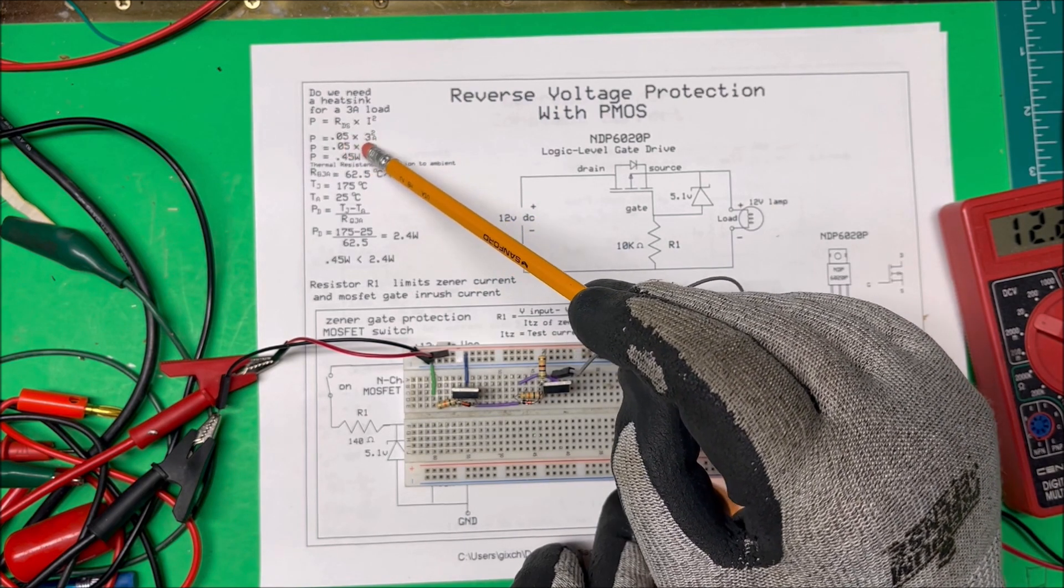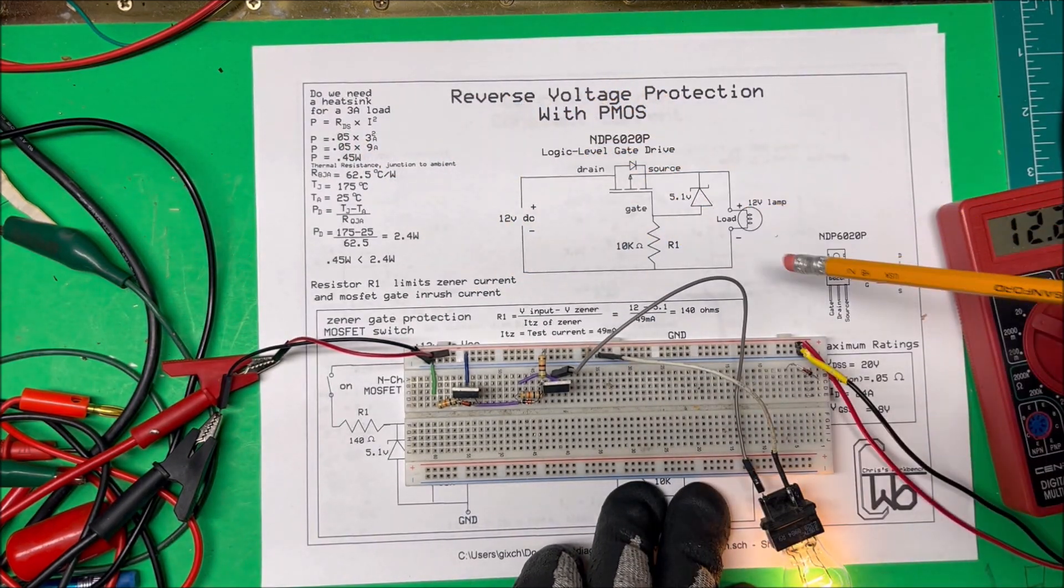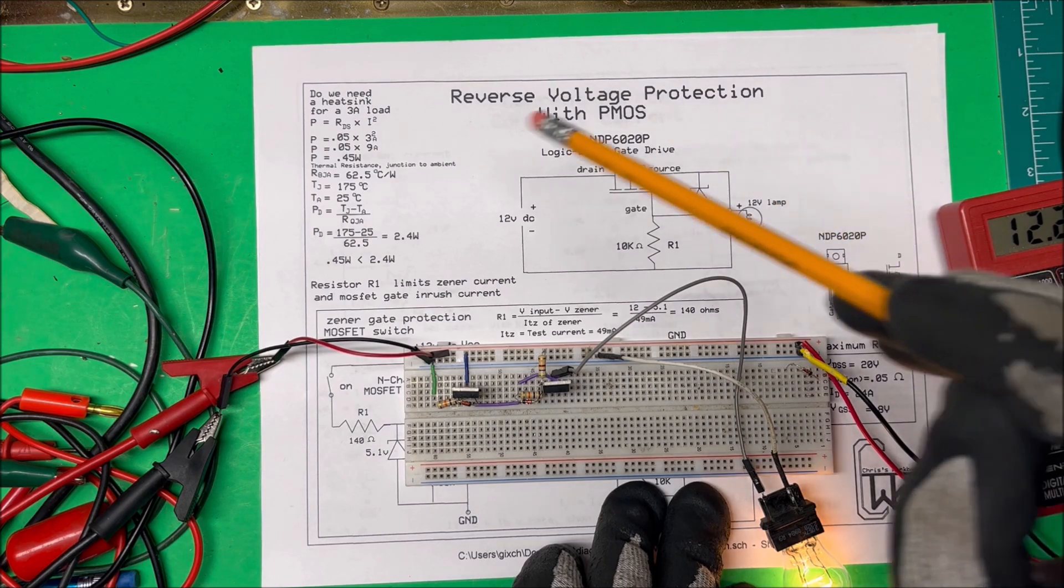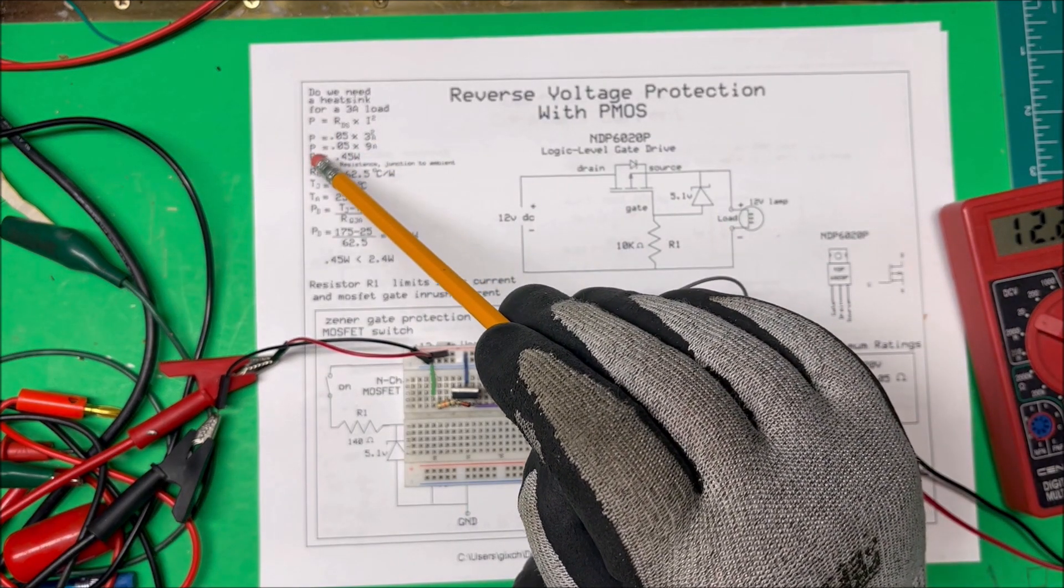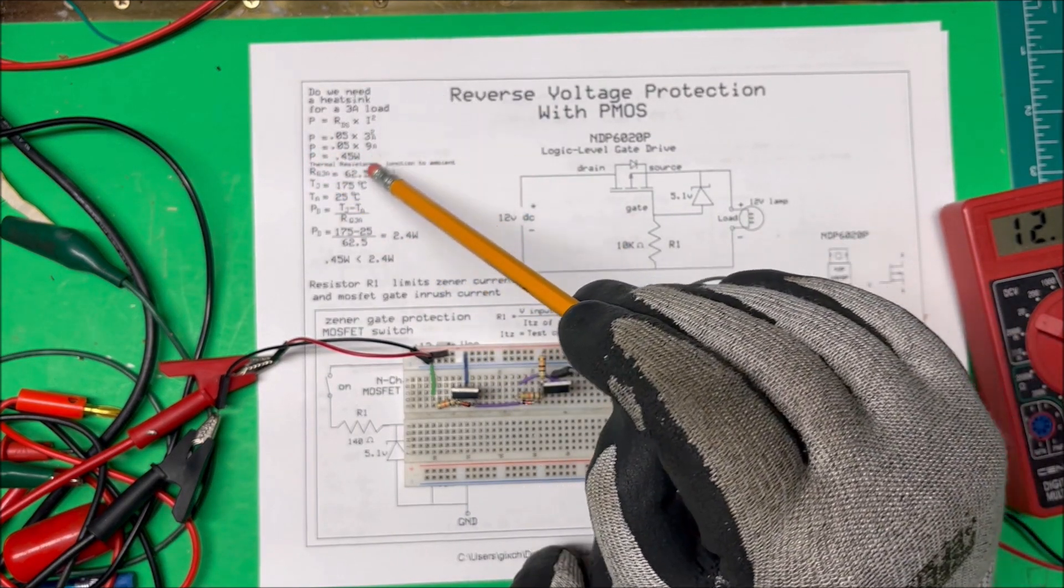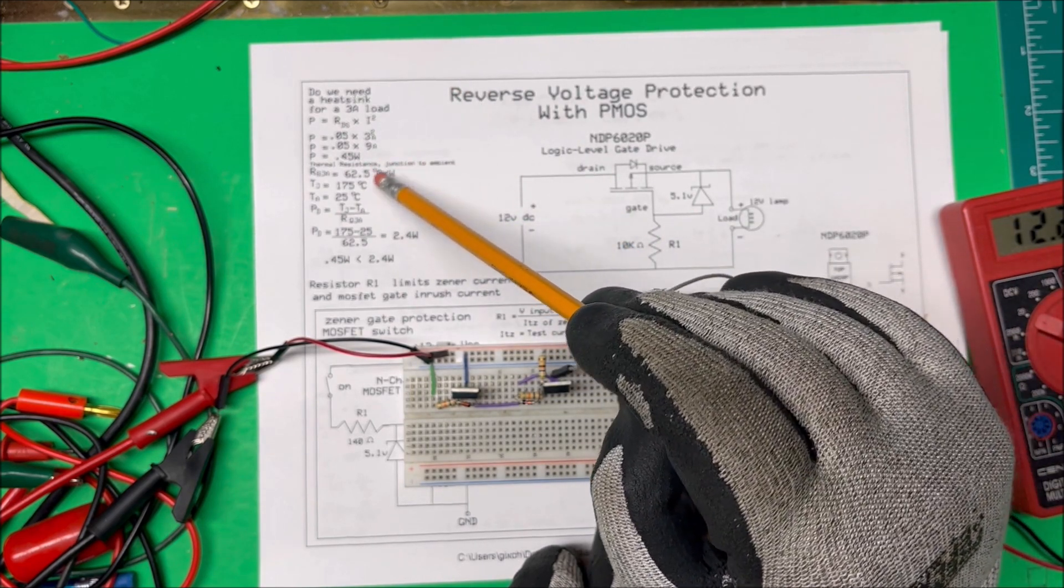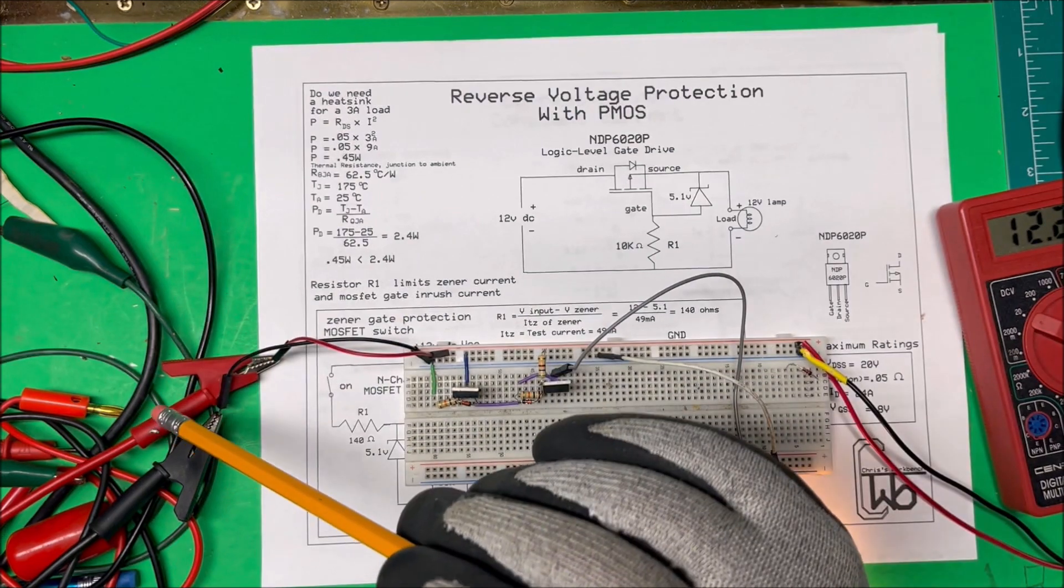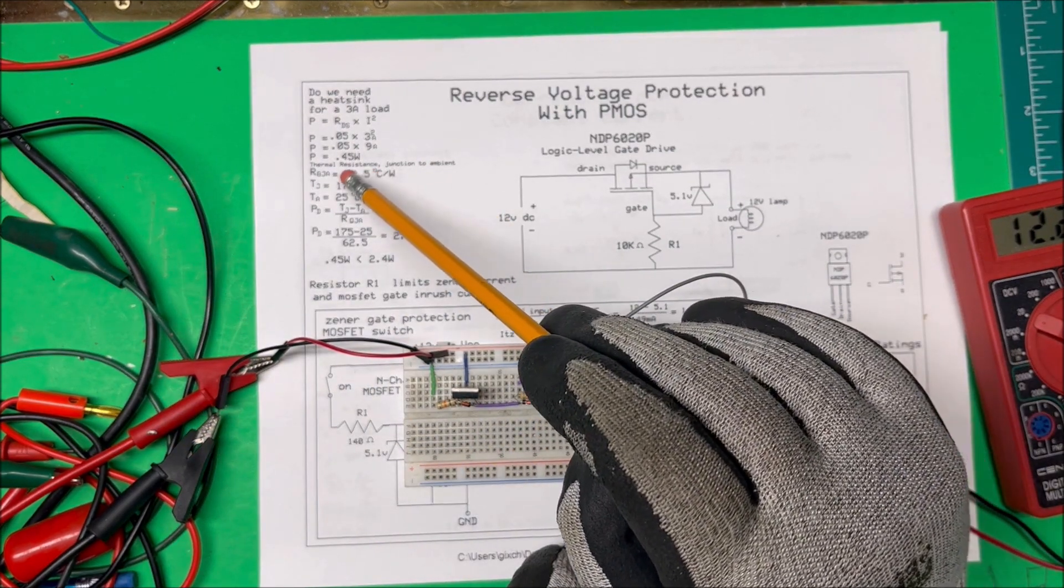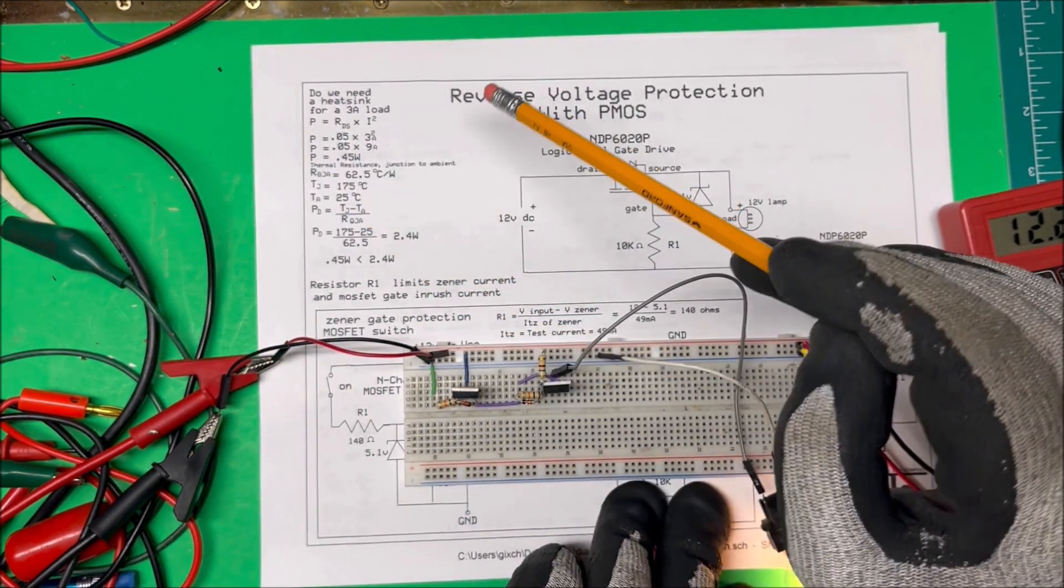So I take our 0.05 times nine amps, so that's going to be 0.45 watts that we're going to dissipate across this thing. Now the R-theta-JA on the spreadsheet, which is your degrees centigrade per watt, is 62.5.